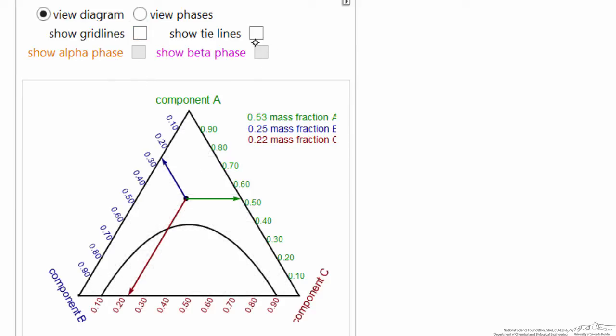with the lines now representing what the compositions are. So I can show grid lines to better illustrate the structure. In this case, I can't select these phases because we're in the one phase region. In the one phase region, you can see the composition is given.